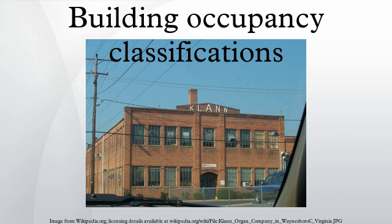In places where more than one occupancy may apply, the stricter code is usually enforced. An example of this is a restaurant with seating under 50, which is not addressed in the code as either mercantile or business. Code enforcement officials will usually enforce the stricter side of the code.